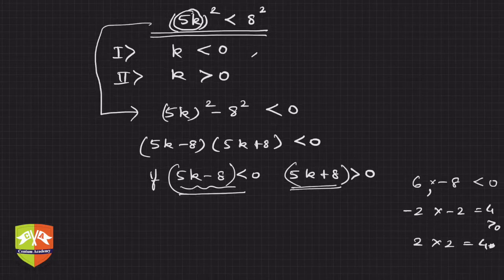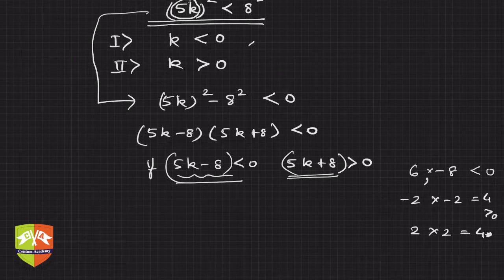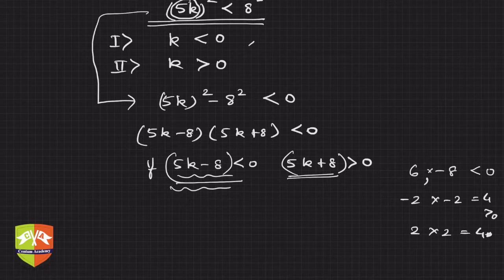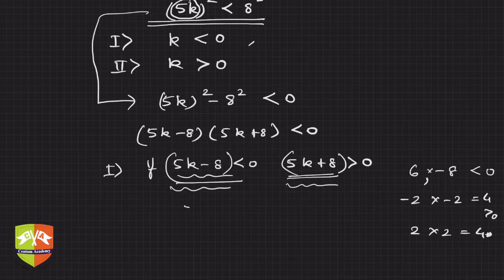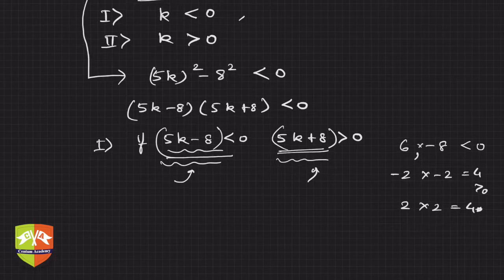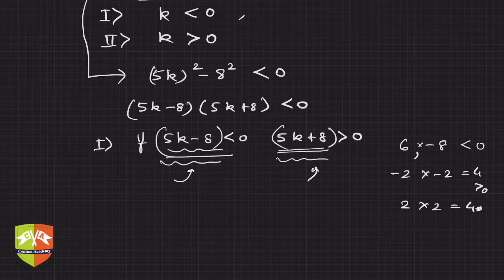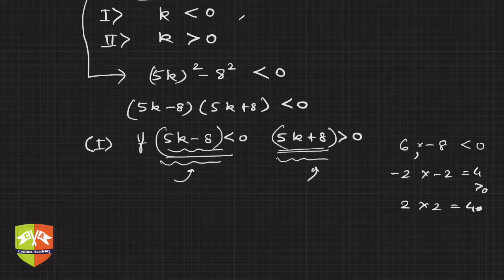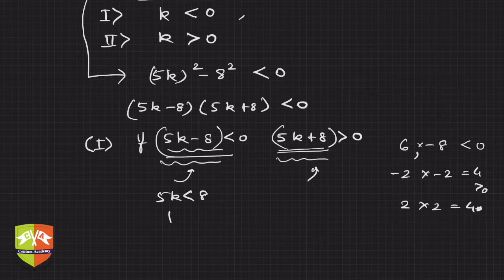By that logic, if 5k − 8 < 0 and 5k + 8 > 0, we explore this as Case 1. We don't know which factor is less than 0, so we'll explore all possibilities.